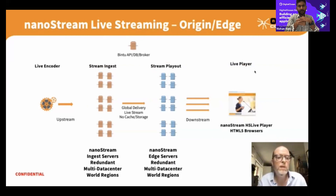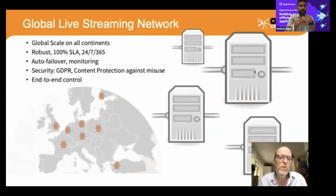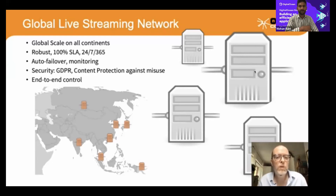The system must be redundant, stable, and include automatic failover, with multiple data centers running simultaneously to stay up 24/7. This is called an origin-edge architecture, combining origin/ingest servers with playout servers deployed in different regions globally. A good cloud provider ensures the right servers are available in the right regions. Security is also increasingly important — including compliance, GDPR, and content protection against misuse.